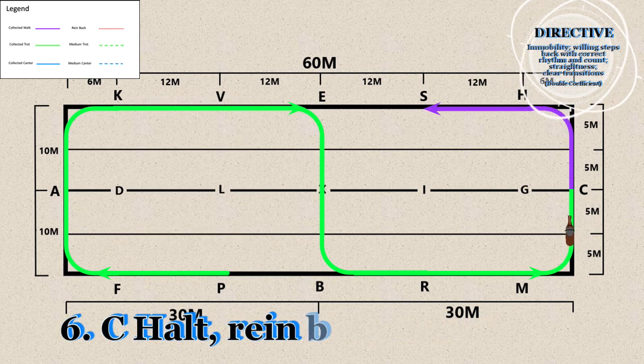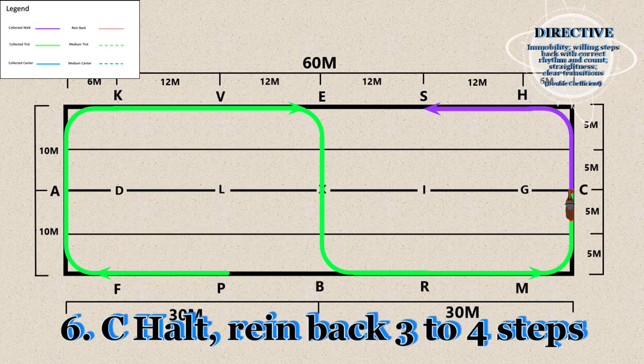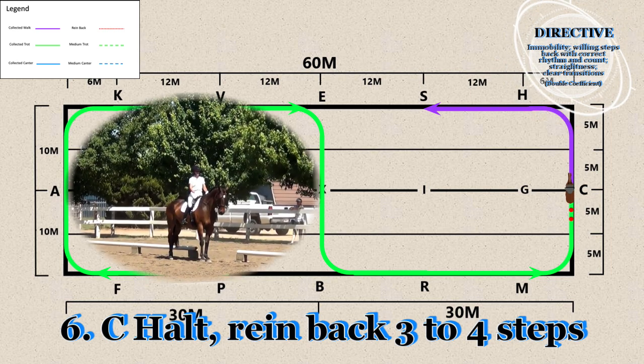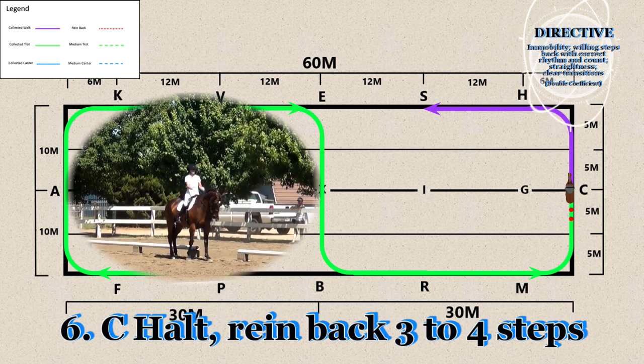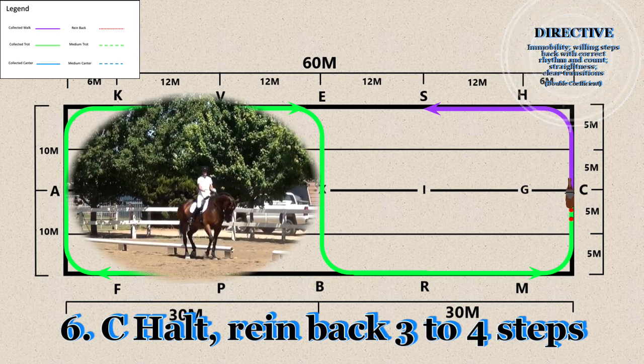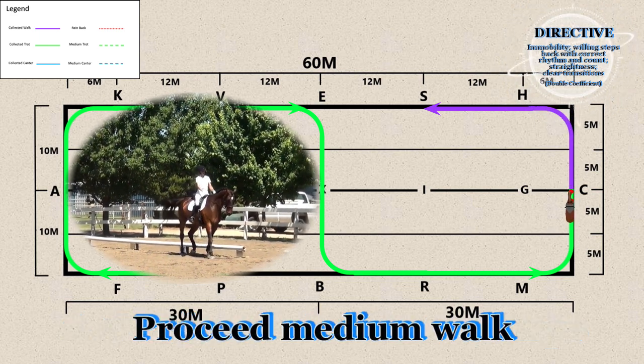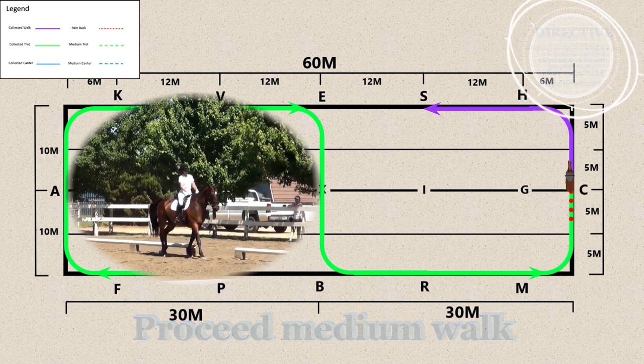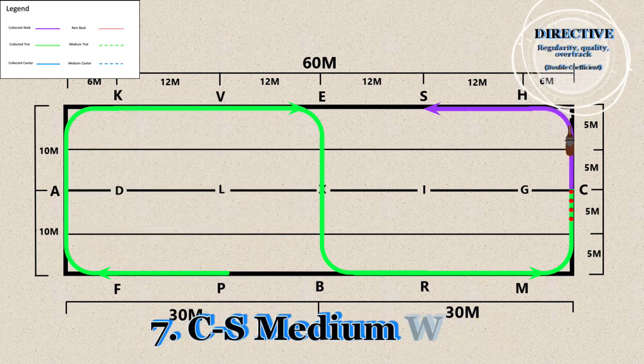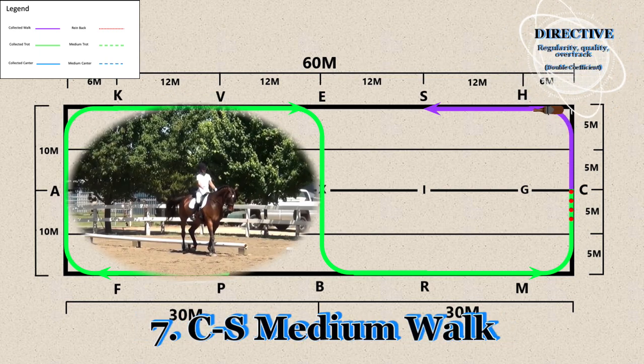6. C - Halt, rein back 3 to 4 steps. Proceed medium walk. 7. C through S - Medium walk.